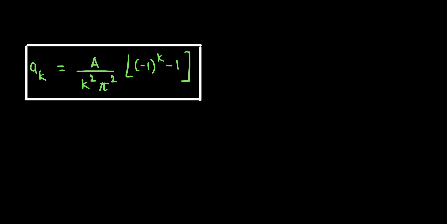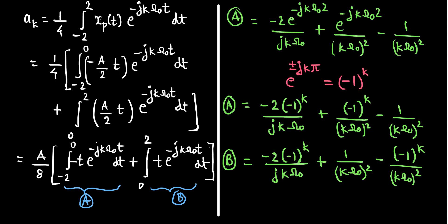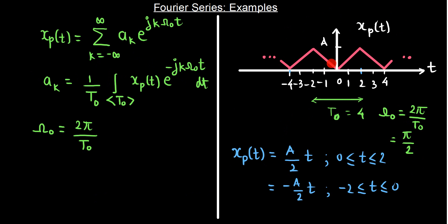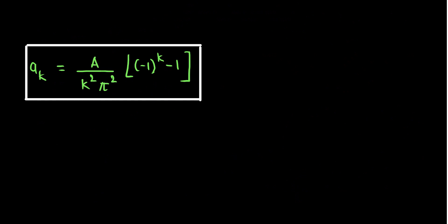Now observe this expression carefully. This gives the coefficients of the Fourier series representation of the signal we considered, which is a triangular wave. For this triangular wave, we have obtained the a_k's. However, note that k equals 0 is not valid in this expression, so we will have to calculate a_0 separately. Using the same calculations with k equals 0 in the original integral, a_0 turns out to be a half.